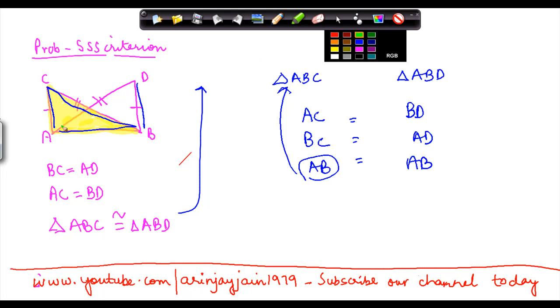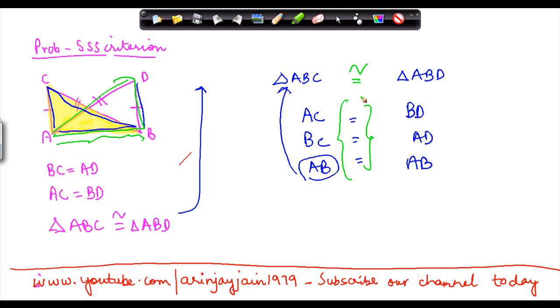Let's say suppose this is the triangle ABD, then side AB is also a part of this triangle. Now because all these three sides are equal, we say that triangle ABC is congruent to triangle ABD.